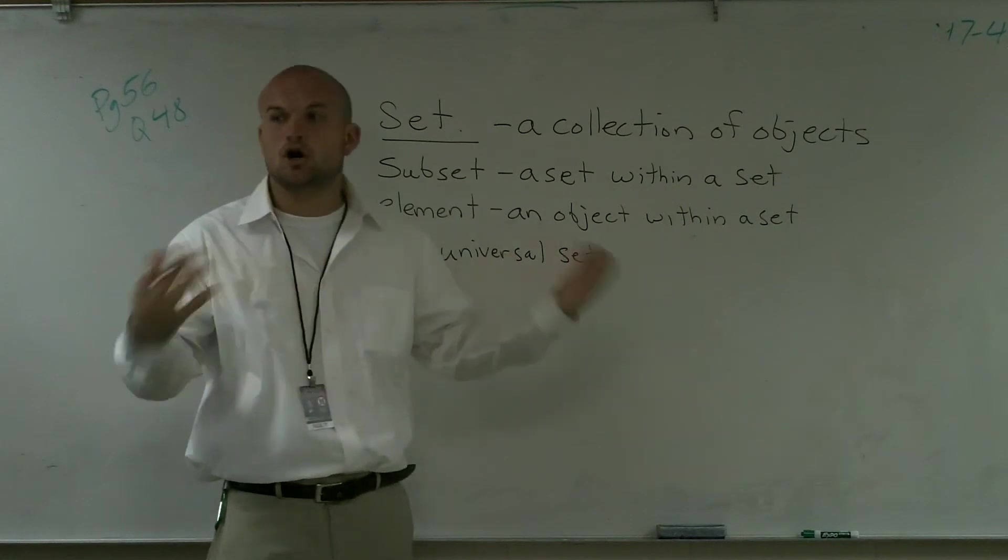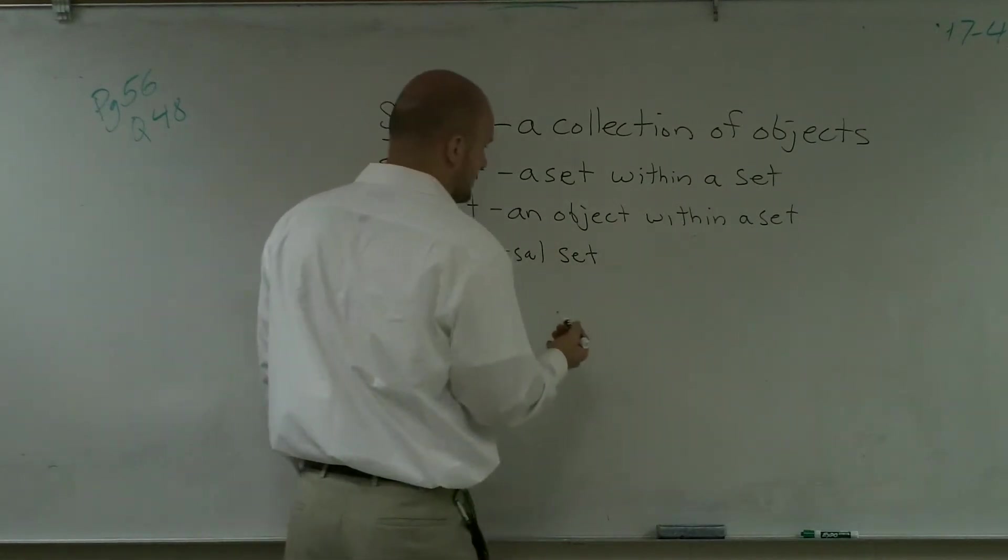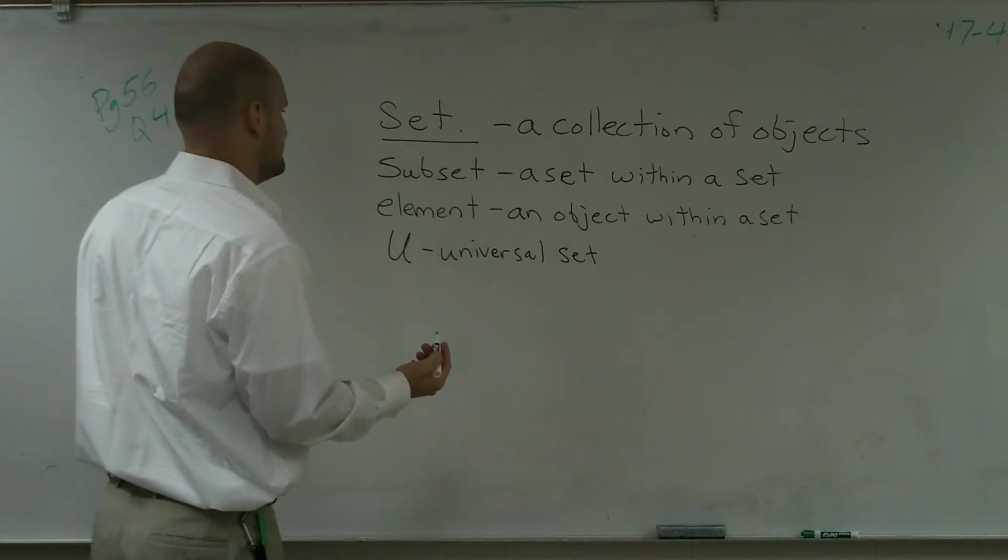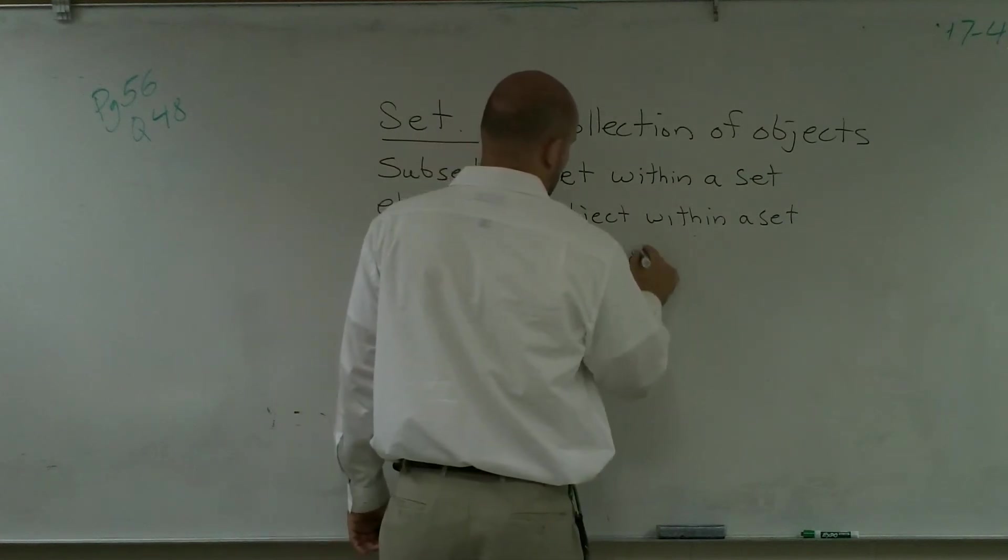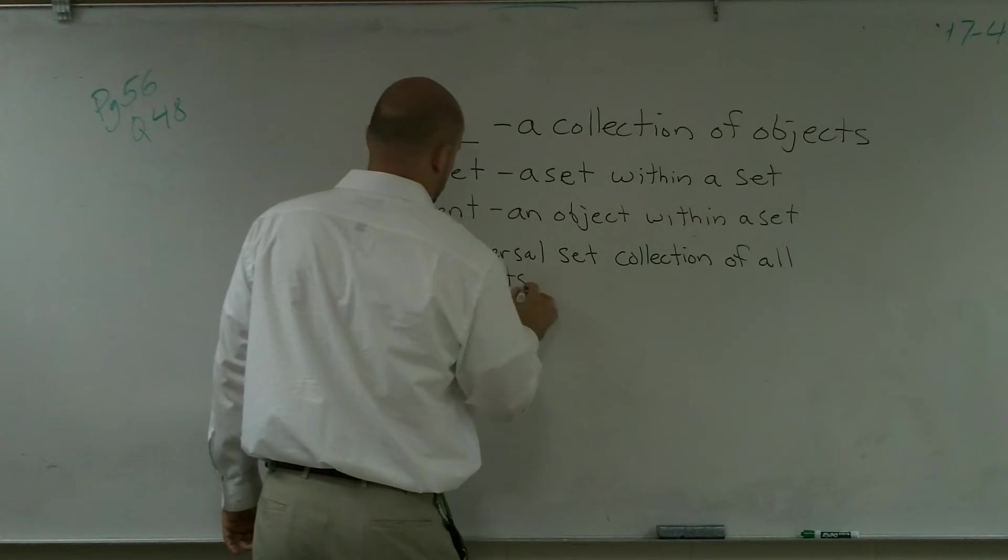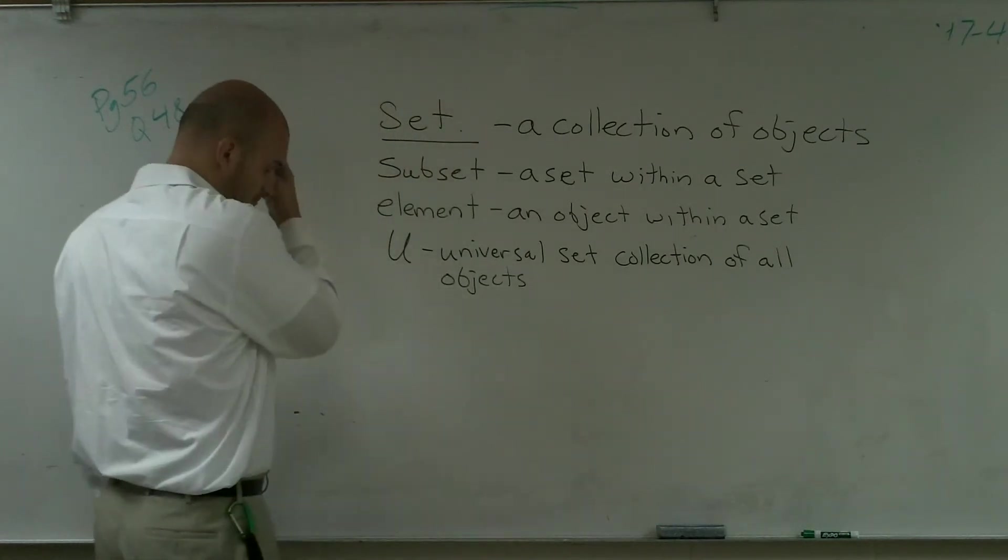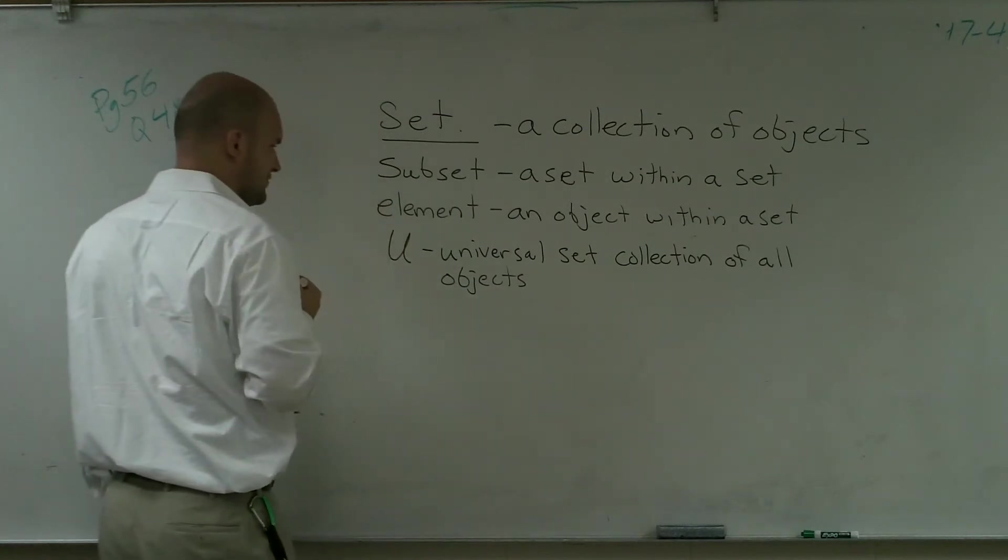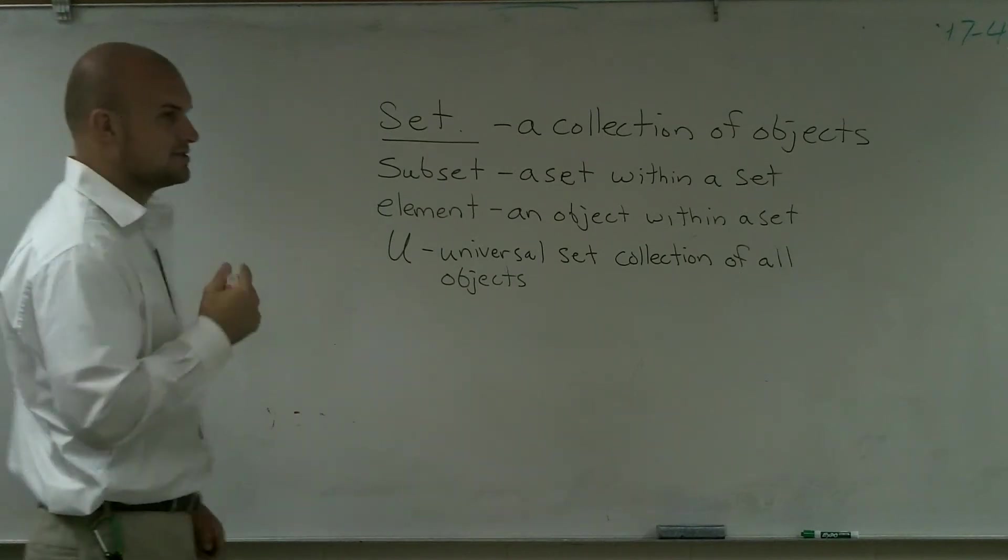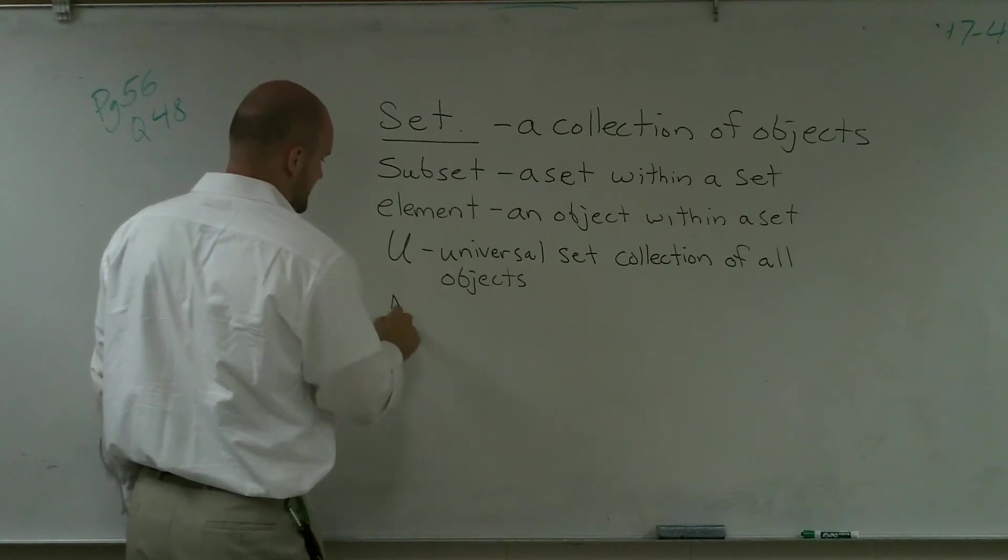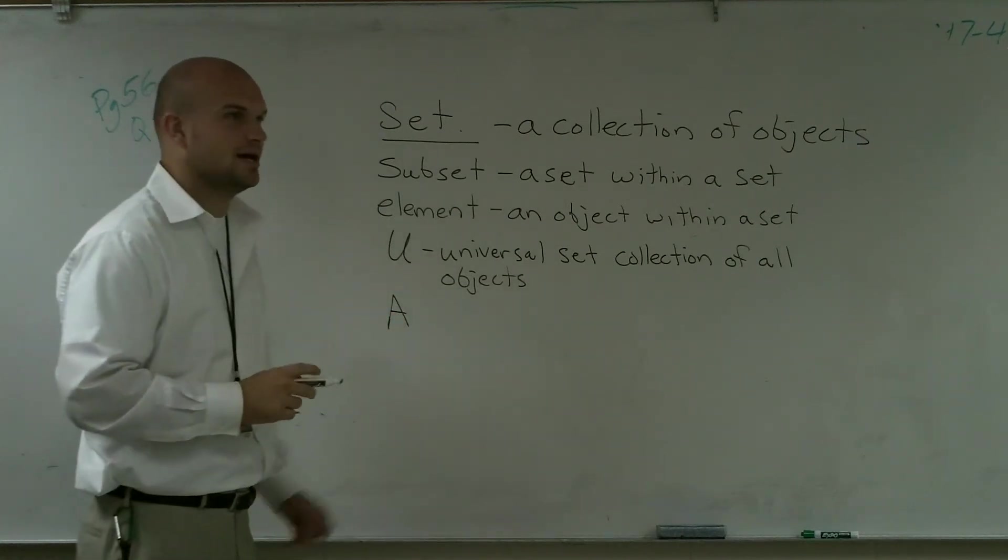So universal set collection, we just call it our universe set, and then we have our collection of all others. So that's our universal set. Now let's look at our regular set notation. We have A would be like a name of a set.